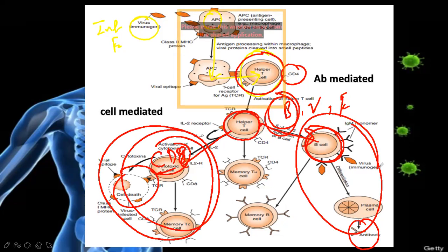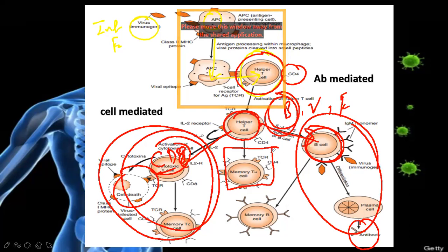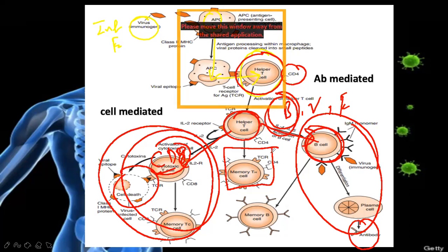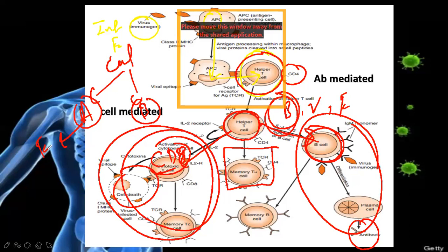When CD4 cell gives message, a very important thing happens: memory cells. One cell divides and makes a copy. That copy stays in the lymph node. For example, one bacteria enters your body — T cells start dividing. One T cell changes into two: one daughter cell goes for work, fighting; the other copy stays in the lymph node as a memory cell.